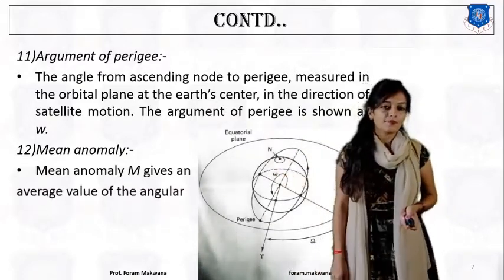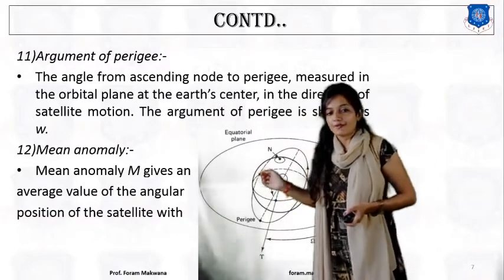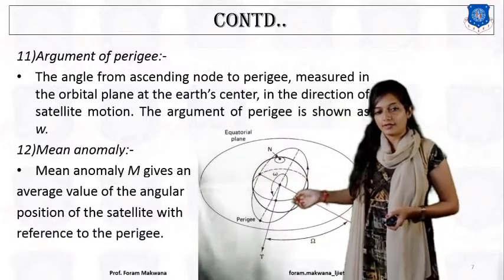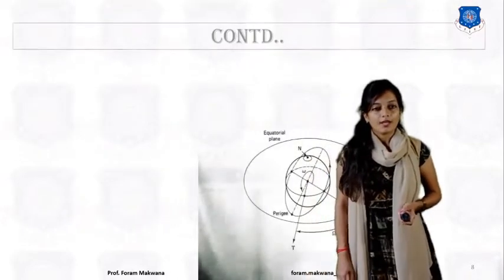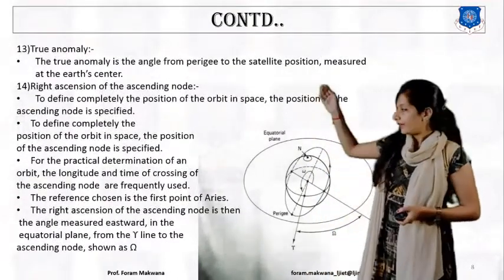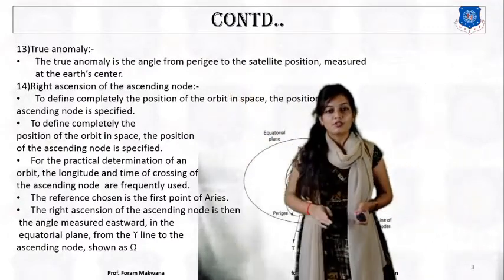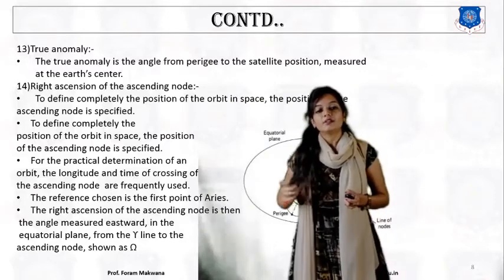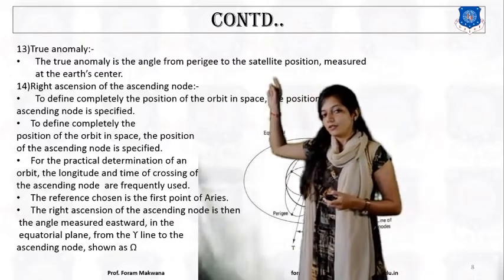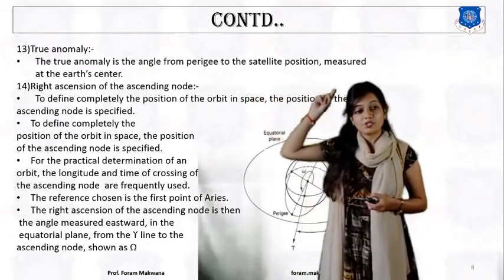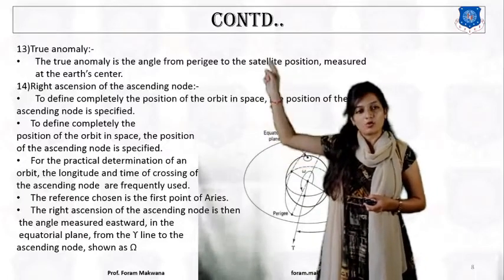What is mean anomaly? The mean anomaly gives an average value of the angular position of the satellite with reference to the perigee. The true anomaly is the angle from the perigee to the satellite position, measured at the earth's center. So if the satellite position is measured with reference to the earth's center, it is called the true anomaly.